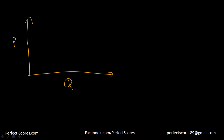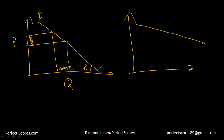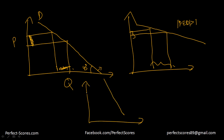To revise: if the demand curve makes a 45-degree angle with the x-axis, PED equals 1, so the percentage change in price equals the percentage change in quantity. If I make the demand curve less steep — flatter — PED is greater than 1, because a smaller change in price brings a bigger change in quantity demanded. If I make it steeper, PED is less than 1, because a big price change brings only a small change in quantity demanded.